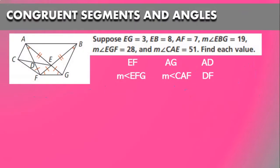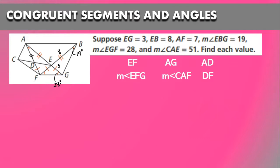Now we're going to try solving a problem. Suppose EG is equal to 3, EB is equal to 8, AF is 7. The measurement of angle EBG is 28 degrees, and the measurement of angle CAE is 51 degrees. Find each value.